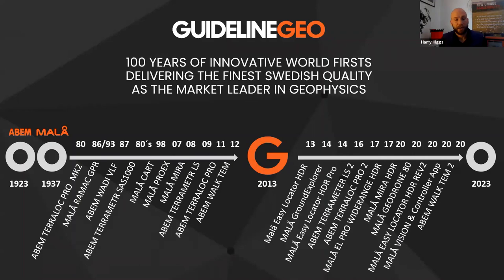So Abram as a company was founded in 1923. Mahler was founded 14 years later in 1937 and here is a list of some of the GPR resistivity seismic and more recently TEM products released over the years. In 2013 Mahler and Abram were brought together under the Guideline Geo banner maintaining the individual branding of both Mahler and Abram.